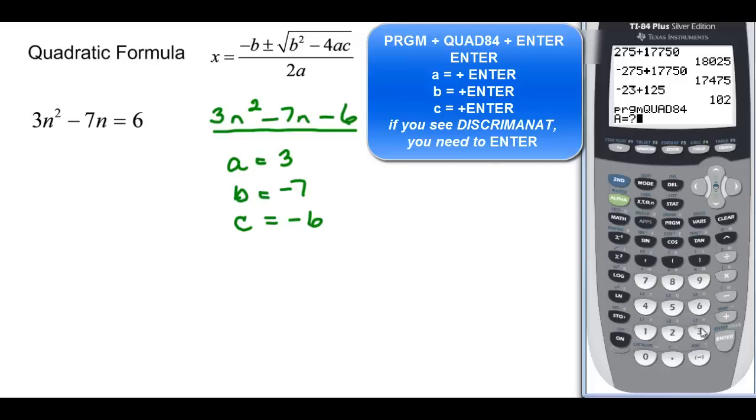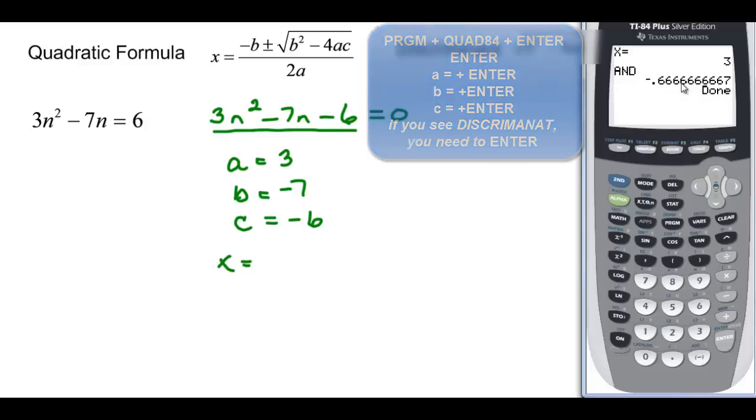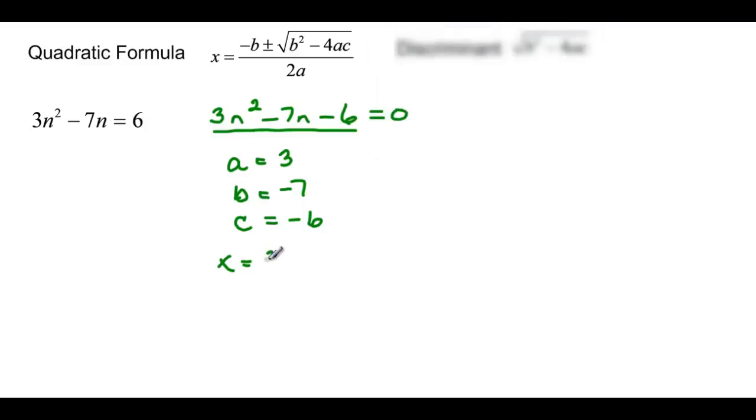And then I enter my a, which was 3, enter. b, which was negative 7, enter. c, which is negative 6, and enter. And I find out that x is equal to 3 and negative, this is 2 thirds. So x is equal to 3 and negative 2 thirds.